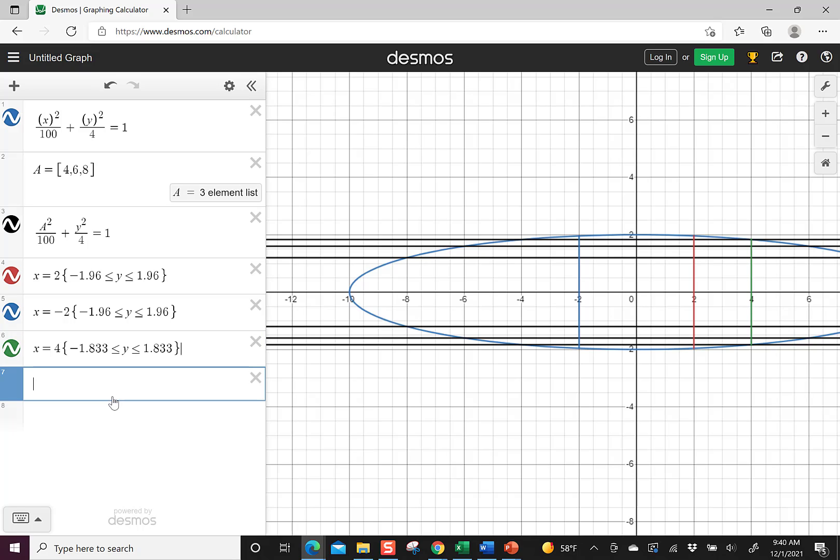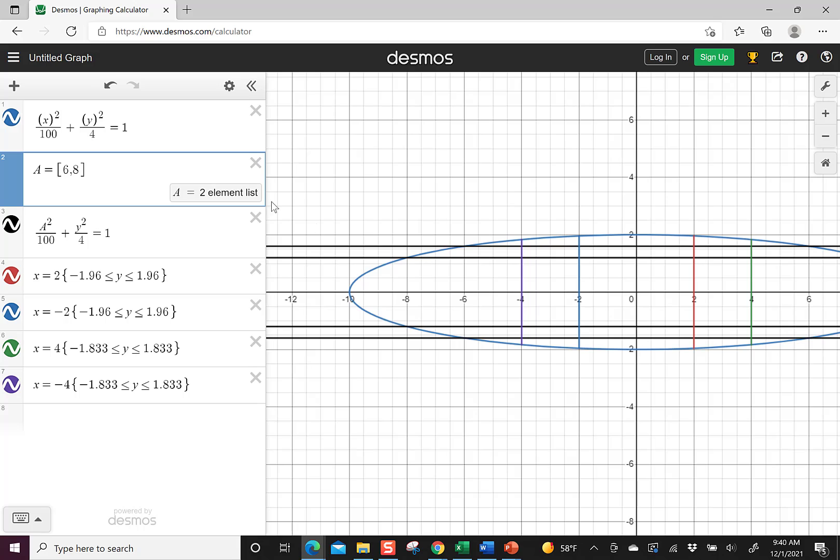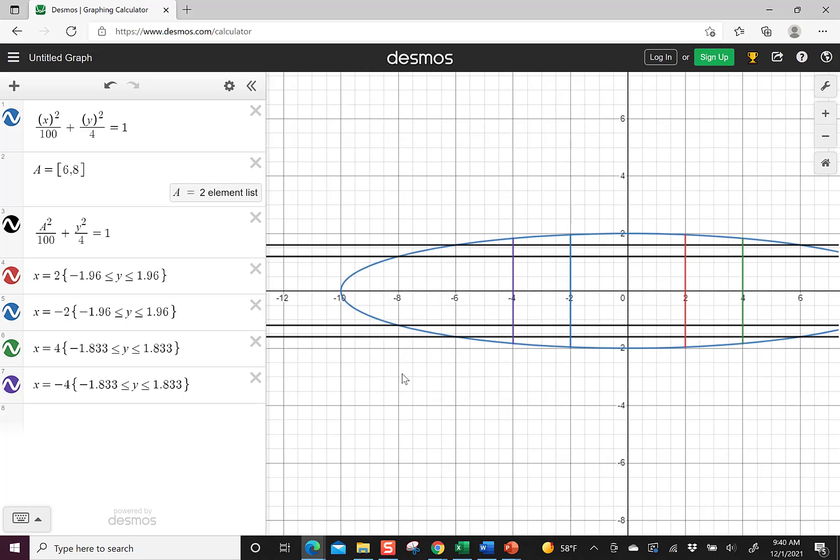Again, that gives me the one on the right. I would also do x equals negative 4 and give the same conditions for y. And then again, I'm going to remove the 4 just to kind of keep the graph looking kind of pretty and having less stuff on it.